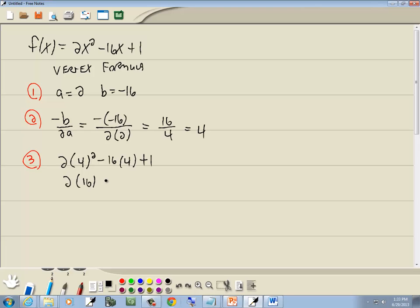Well, 4² is 16, minus 16 times 4 is 64, plus 1. 2 times 16 is 32, minus 64, plus 1. 32 minus 64 is -32, plus 1, or -32 + 1 is -31.